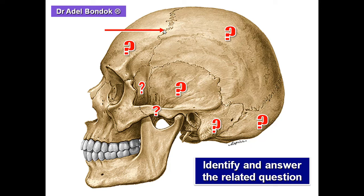This suture is the coronal suture, and this one is the lambdoid suture. This is the styloid process. This projection is the articular tubercle, which prevents forward displacement of the head of the mandible — thus preventing dislocation of the temporomandibular joint.